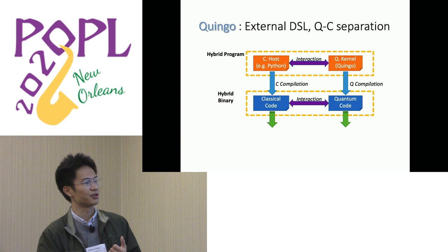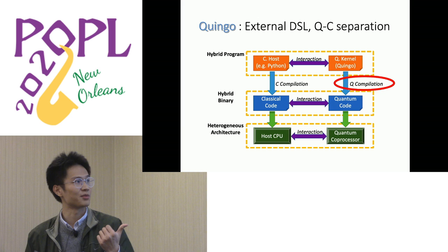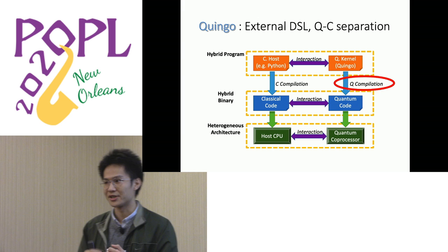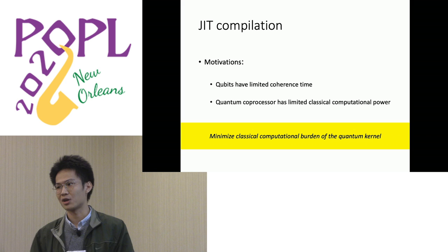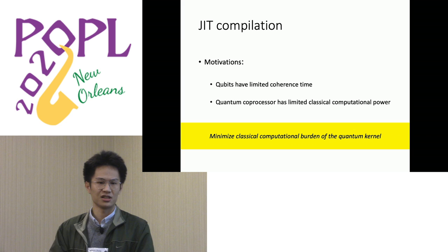Since the quantum compilation procedure is separated from the classical compilation, we are able to open more opportunities for compiler optimizations. In our case, we employ just-in-time (JIT) compilation. The motivation is that qubits have limited coherence time and the quantum co-processor has limited classical computational power, forcing us to minimize the classical computational burden from the quantum kernel.